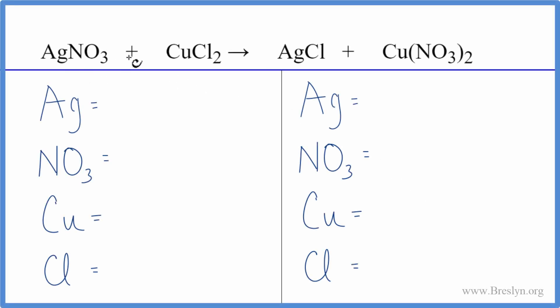In this reaction, we have silver nitrate plus copper 2 chloride. This is a double displacement reaction. The silver and the copper, they're going to change places in this reaction.